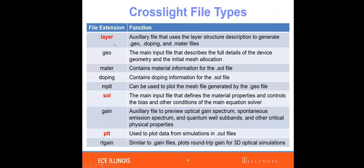In this simulation, we are going to use a layer file, a solution file, and a plot file. Previously we used the GAN file to preview the optical GAN spectrum. But in this LED simulation, we are going to use the solution file because it's the main input for defining the controlling bias and other iteration conditions. The plot file is used to plot data and analyze your results.